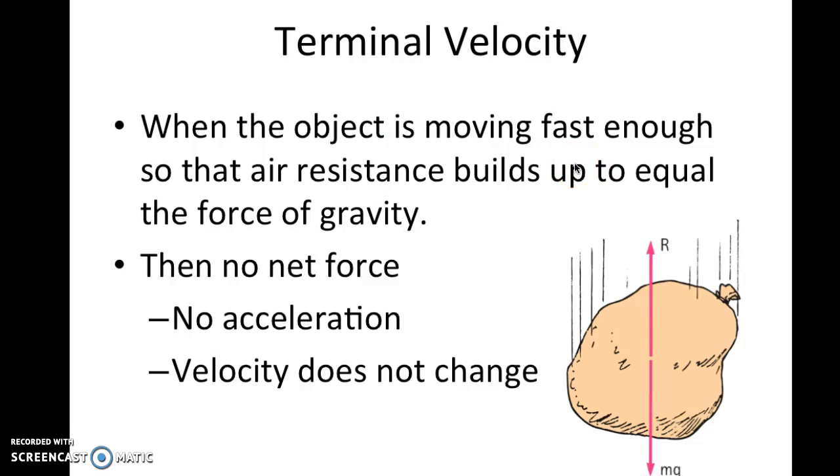So when the object is moving fast enough that air resistance, the upwards force equals the gravitational force, then the net force is then zero. And that's because we have an upwards force equal and opposite to the downwards force. So they cancel each other out. So with no net force, there's no acceleration. With no acceleration, the velocity does not change. We call this point in time terminal velocity. So terminal velocity is reached when the force of air resistance is equal to the force of gravity.